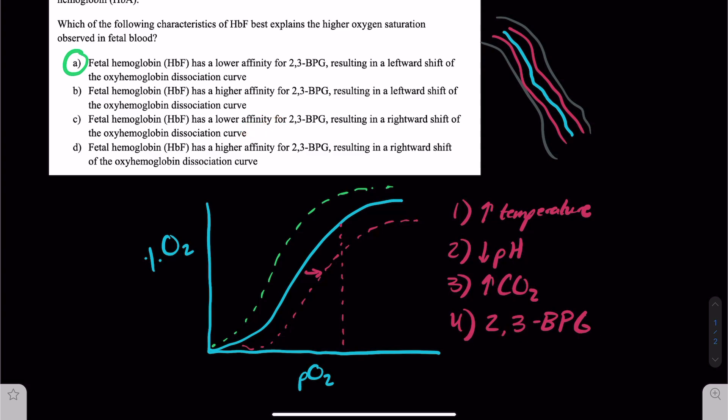And then finally, D, fetal hemoglobin has a higher affinity for 2,3-BPG resulting in a rightward shift of the oxyhemoglobin association curve. If you looked at this on its own, that is a factually correct statement. However, the question is telling us that the oxygen saturation in the umbilical vein is actually higher than in an adult artery. And for the oxygen saturation to be higher, we actually have to have a leftward shift to have an increase in the amount of oxygen bound to hemoglobin at that same concentration of oxygen dissolved in the blood.